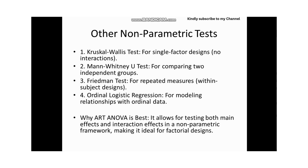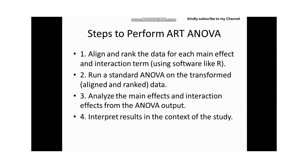Why is ART ANOVA best? It is best because it allows for testing both main effects and interaction effects in a non-parametric framework, making it ideal for factorial designs. The steps to perform ART ANOVA are: first, align and rank the data for each main effect and interaction term using software like R; second, run a standard ANOVA on the transformed data; third, analyze the main and interaction effects; and finally, interpret the results.